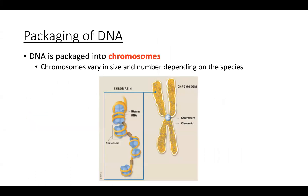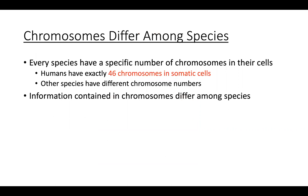DNA is packaged into chromosomes, and these chromosomes can vary in both size and number depending on the species. For humans, we have 23 pairs — 46 total — as seen in the human karyotype. Not all species have the same number of chromosomes. A mouse, cat, or rabbit will not likely have the same number of chromosomes as a human. Every species has a specific number of chromosomes in their cells.